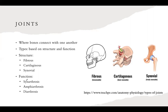For function, there's synarthrosis, which is immovable — an example of this would be sutures in the skull. There's amphiarthrosis, which is slightly movable — an example would be the vertebral disc in the vertebral column. And then there's diarthrosis, which is freely movable joints, such as the hip joint or the shoulder.